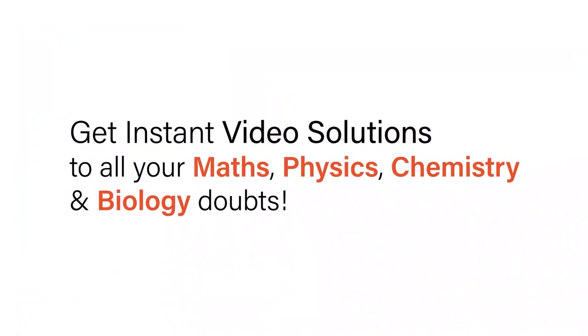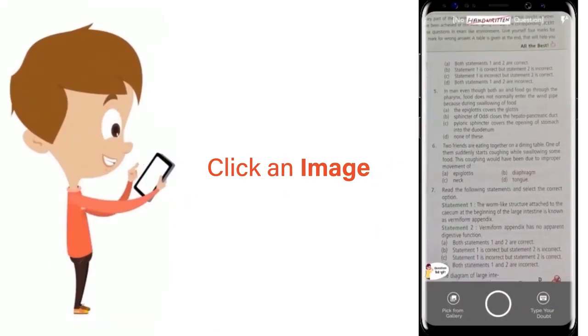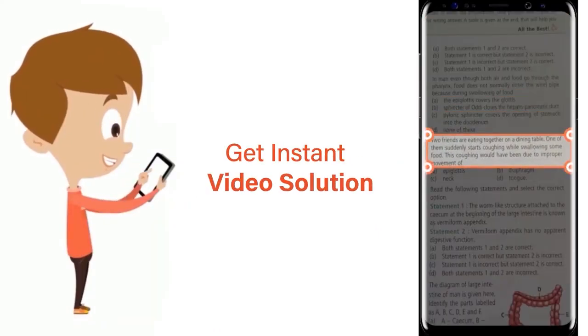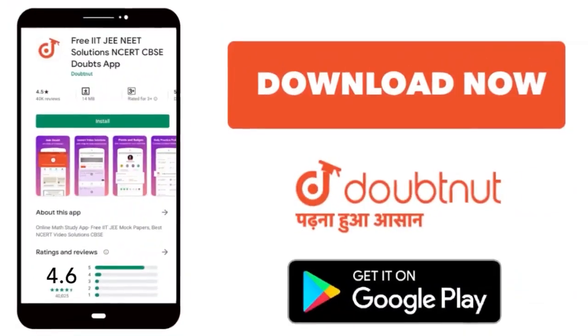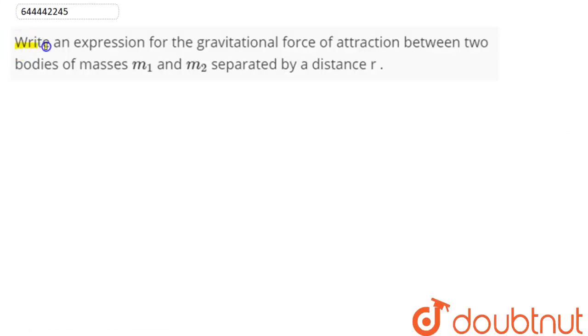With Doubtnut, get instant video solutions to all your maths, physics, chemistry, and biology doubts. Just click the image of the question, crop the question, and get instant video solution. Download Doubtnut app today. Write an expression for the gravitational force of attraction between two bodies of masses m₁ and m₂ separated by a distance r.